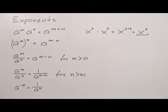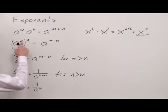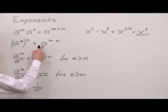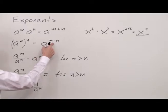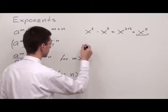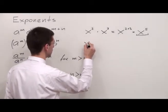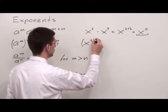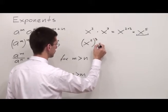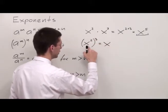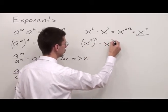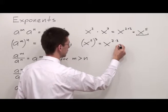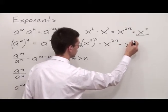The next formula is for power of a power. Anytime we have an exponent inside the parenthesis and an exponent outside the parenthesis, we're supposed to keep the base and multiply exponents. For example, x to the second power and everything is raised to the third power. According to the rule, we keep the base and multiply exponents: 2 times 3. My answer is x to the sixth power.